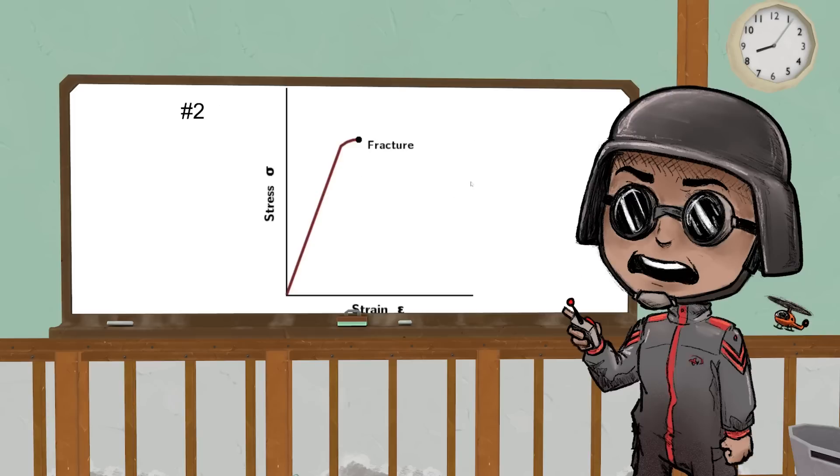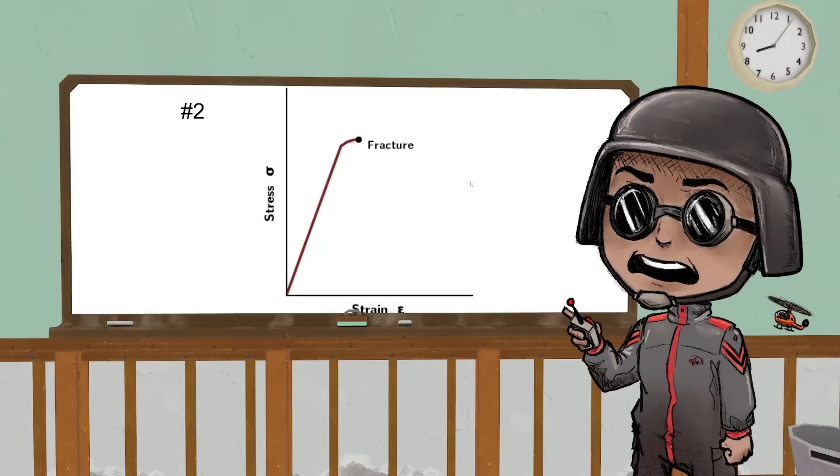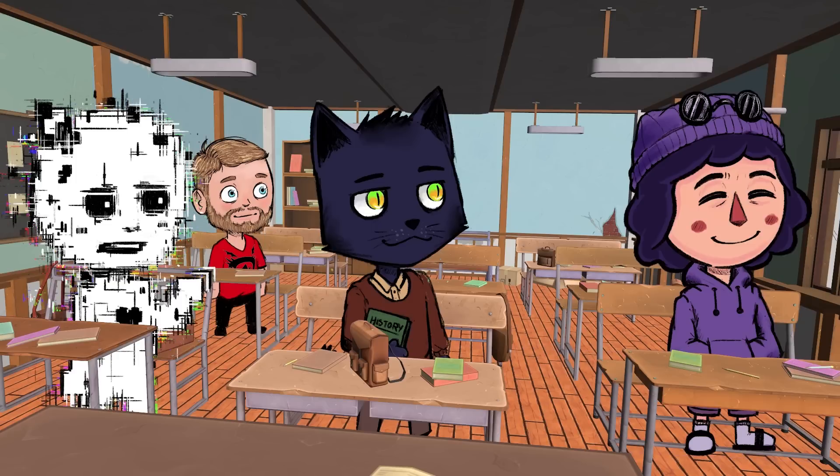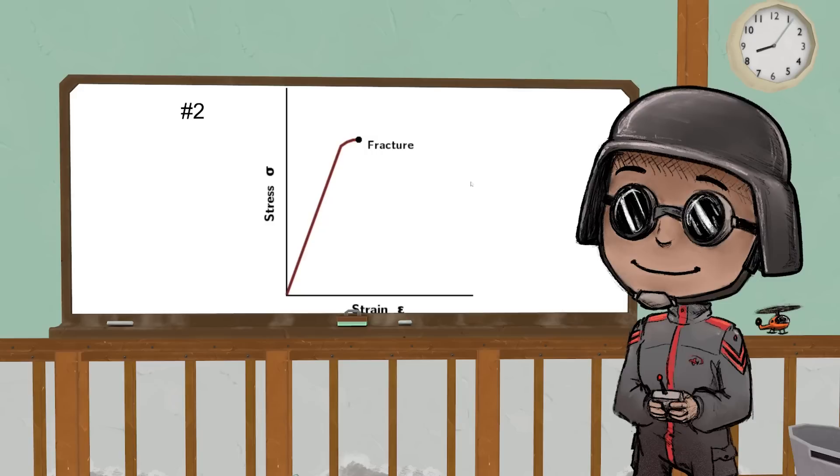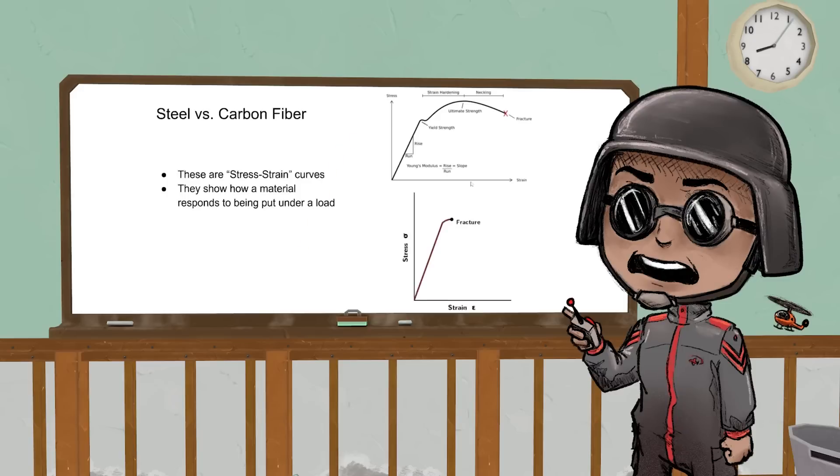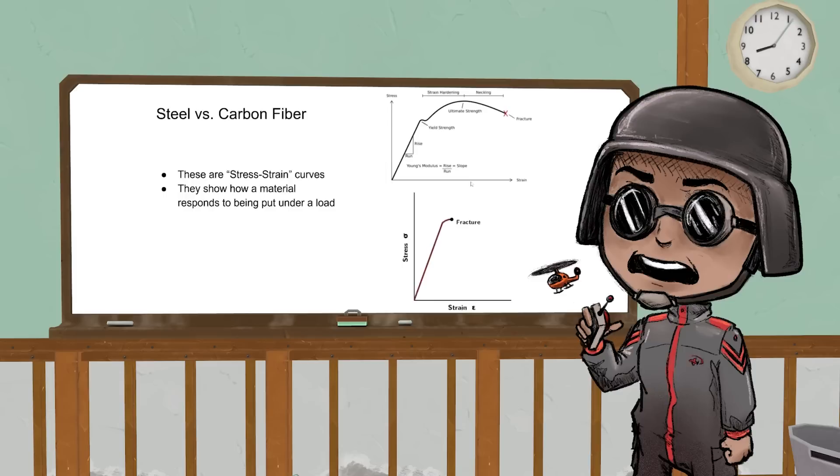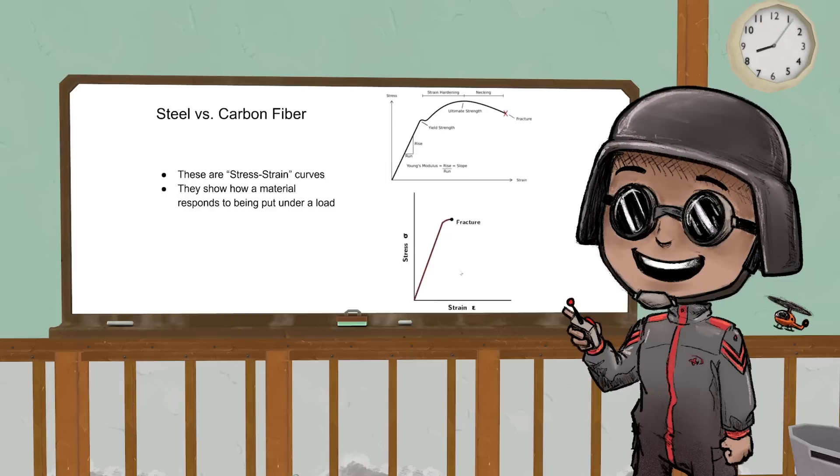This is graph number two. What do you see here? There's no curve. It doesn't have a... Yes. So these are called stress-strain curves, and they are how materials react to being put under force. The one on the top is steel, and the one on the bottom is carbon fiber.